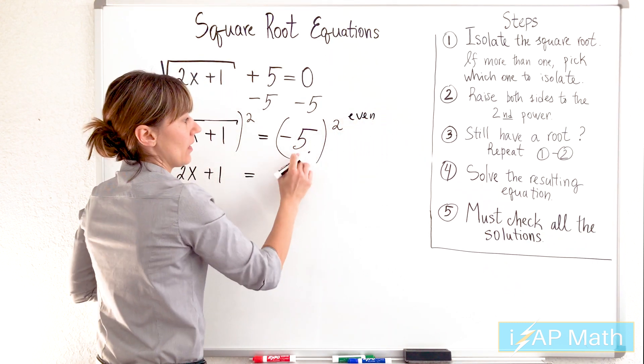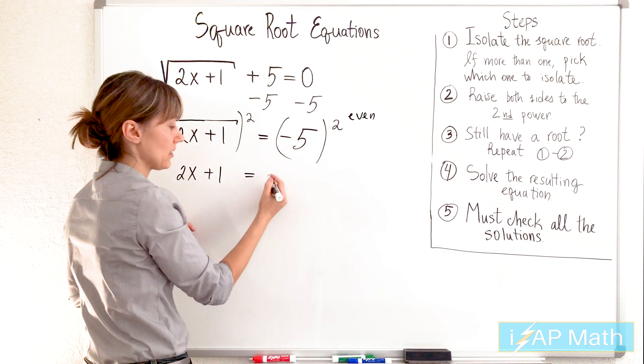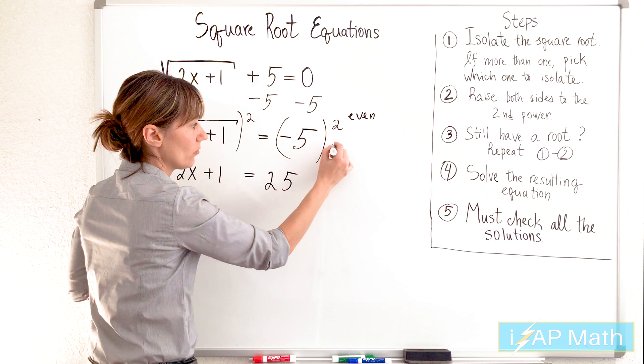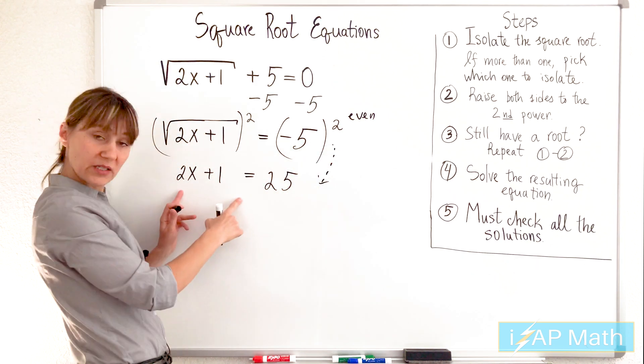You see, even power. Negative number raised into the even power will produce positive numbers. So we have positive 25. You see, from this false statement, we made a true statement. We made ourselves an equation.